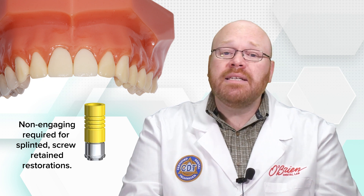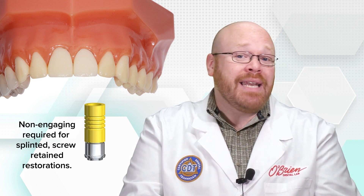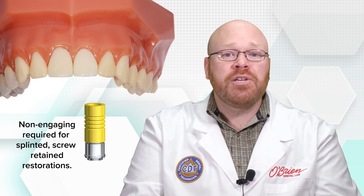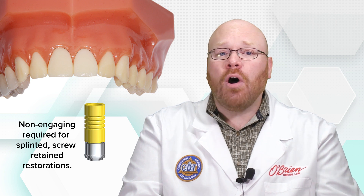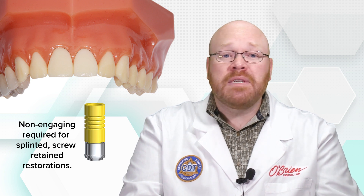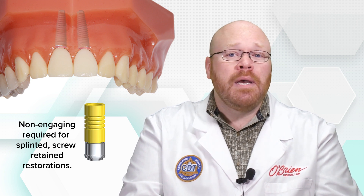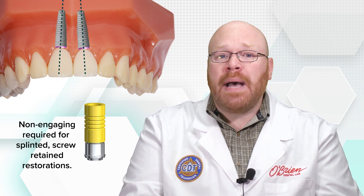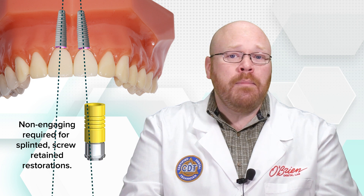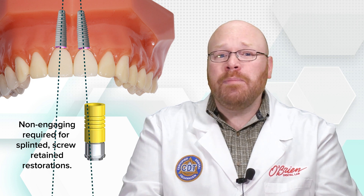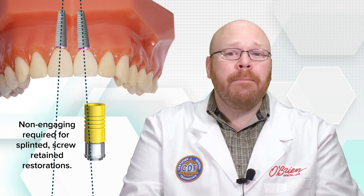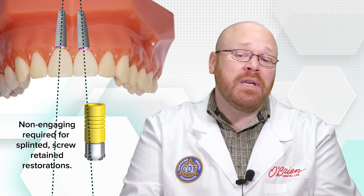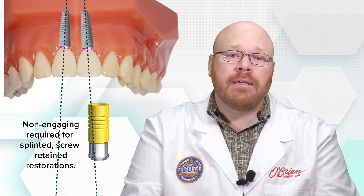In addition to the anti-rotation element not being necessary for splinted screw retained restorations, they can also cause problems if they are used. It would be nearly impossible to get a passive fit with them, and if the implants aren't completely parallel, it may not even be possible to seat the bridge due to interferences.